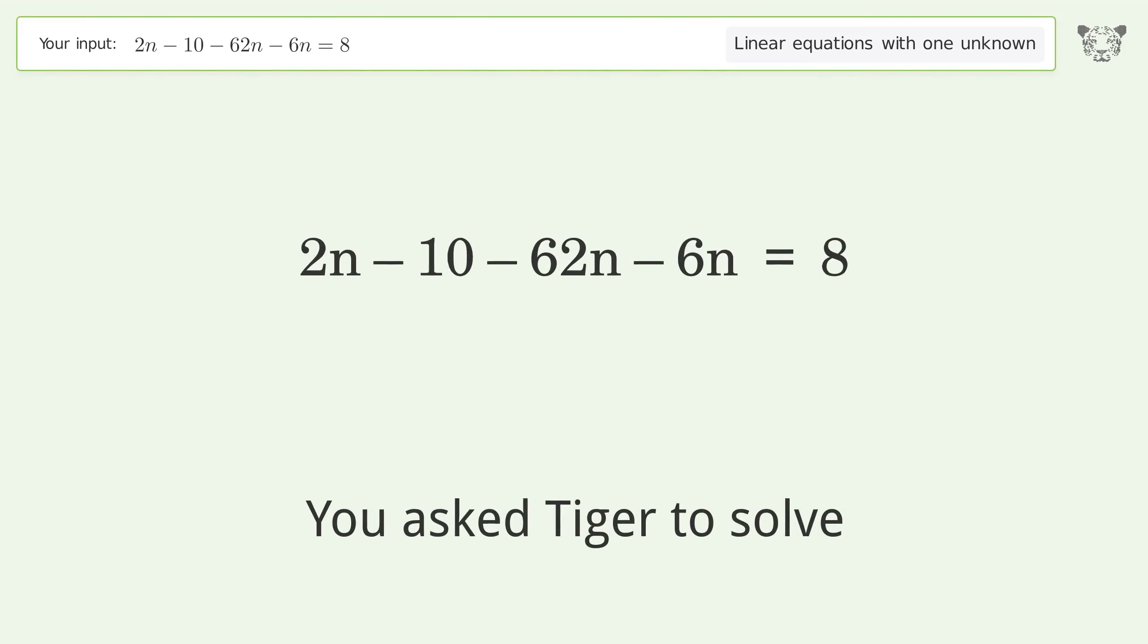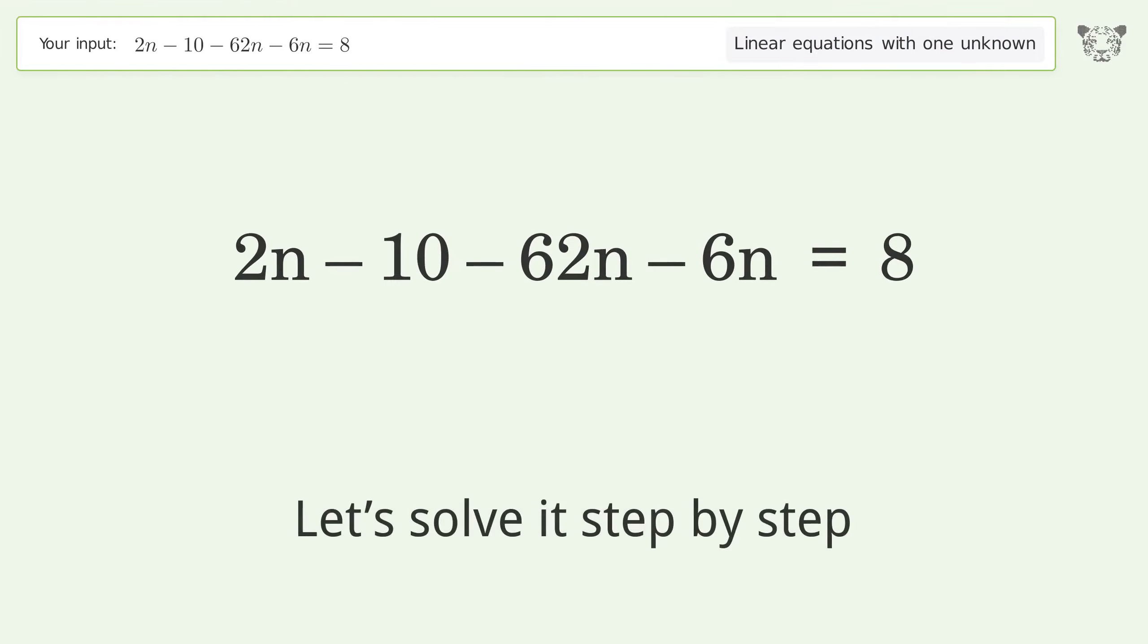You asked Tiger to solve this linear equation with one unknown. The final result is n equals negative 3 over 11. Let's solve it step by step.